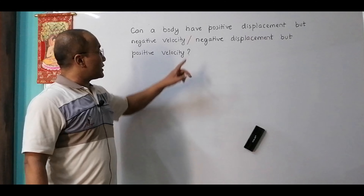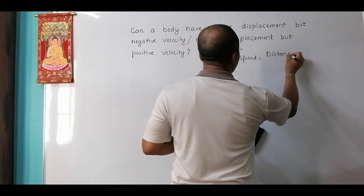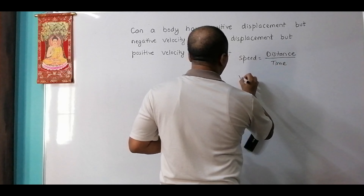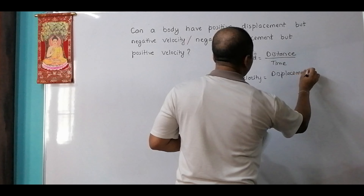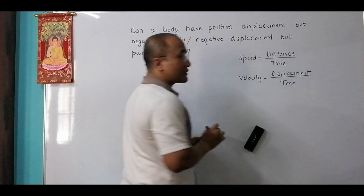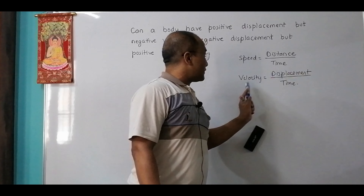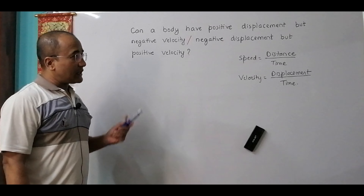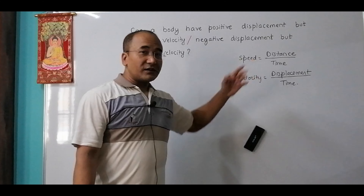Hello folks. Today I have a question which has been asked many times in classrooms. It is not exactly our topic but it is a concept within a topic, and it often eats up the mind of students — maybe those who have just passed class 10, or who are in class 11 or A-level. The question is: can a body have a positive displacement but negative velocity? And then, negative displacement but positive velocity?